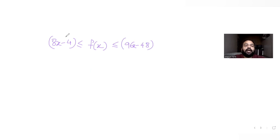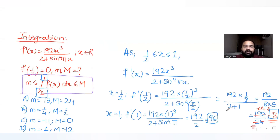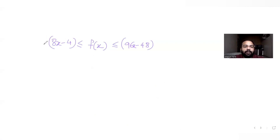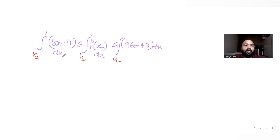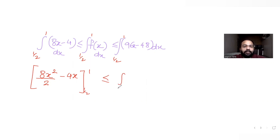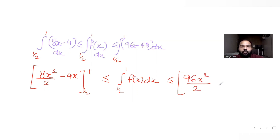To get the idea asked in the question, I take the integral again with limits from 1/2 to 1 everywhere. The integral of (8x − 4) gives 8x²/2 − 4x = 4x² − 4x. The integral of (96x − 48) gives 96x²/2 − 48x = 48x² − 48x. Both evaluated with limits from 1/2 to 1.